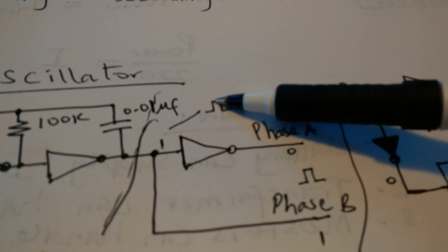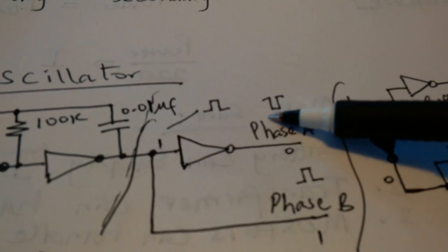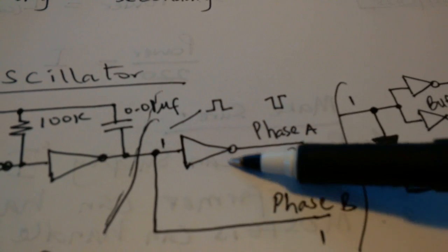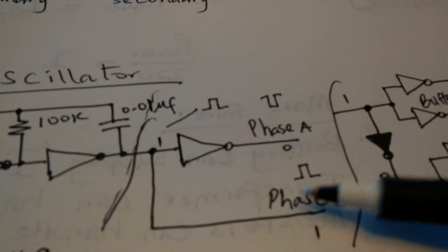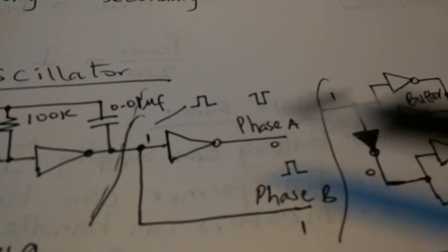So in other words, if I have positive going signal here, it will be turned to a negative going signal after going through this inverter. But that same positive going signal remains the same right over here.